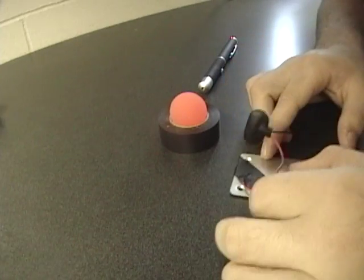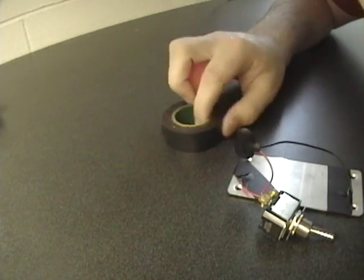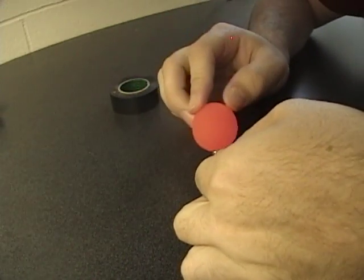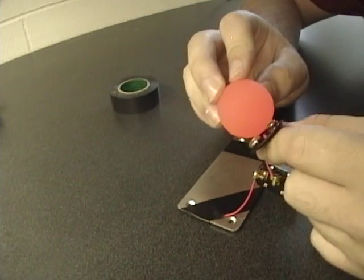And then what you do with this battery clip is take the rubber ball, put it on there so that they are touching the battery clips. Make sure that it's touching the two terminals.